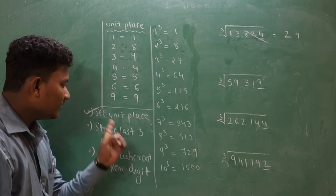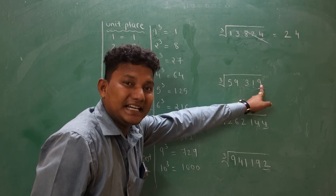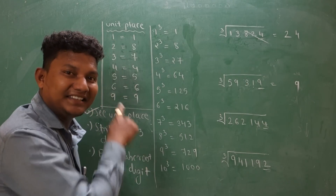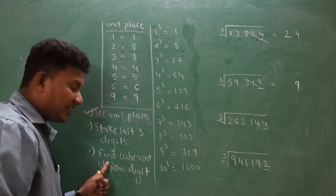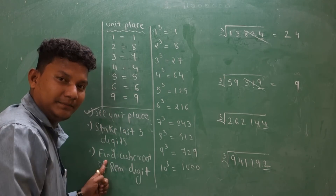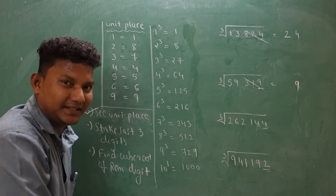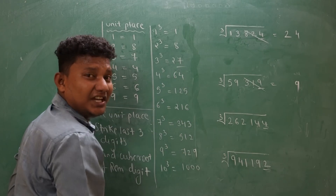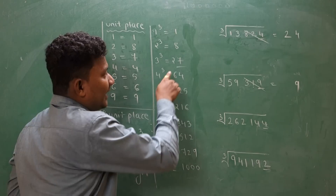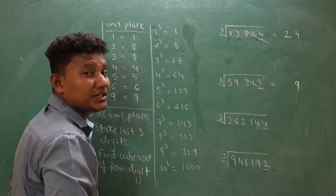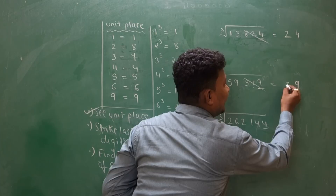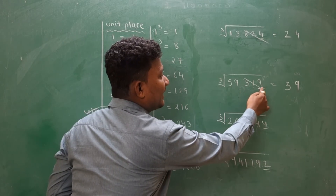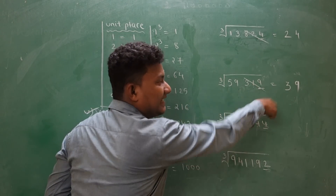Focus on the next example. See the unit place — it is 9. For 9, the answer is 9 only, so write 9. Strike the last 3 digits. Find the cube root of the remaining number, either 59 or less than 59. 59 lies between 27 and 64. You have to see the cube root which is less than that, so the answer is 27, and the cube root of 27 is 3. Write down 3. When you multiply 39 × 39 × 39 you get 59319, so the cube root of 59319 is 39.